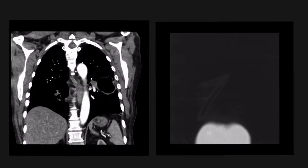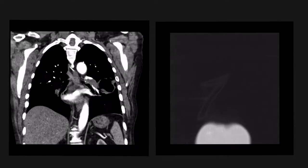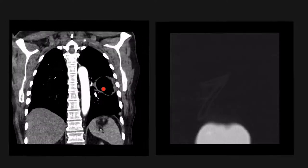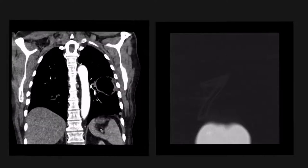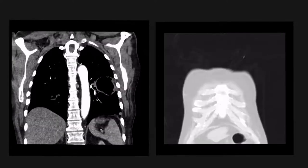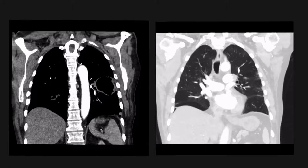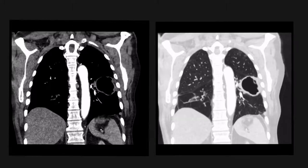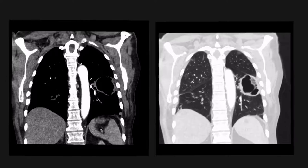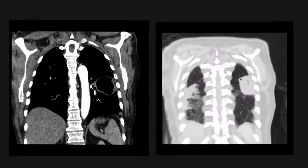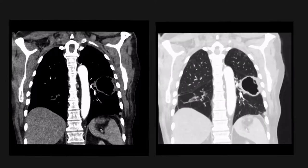On the CT chest in the same patient, there is extensive thrombus in the left main pulmonary artery, and the abnormal lesion is seen in the territory supplied by that artery, in keeping with an infarct. On lung windows this confirms a cavitating lesion. This was a pulmonary infarct in a patient who had a pulmonary embolism.